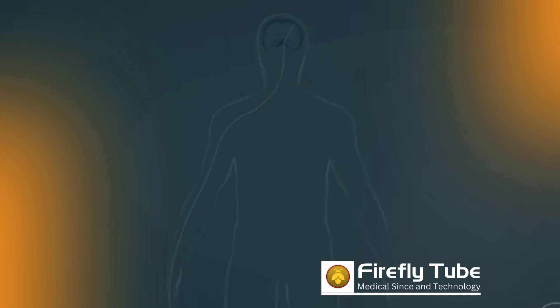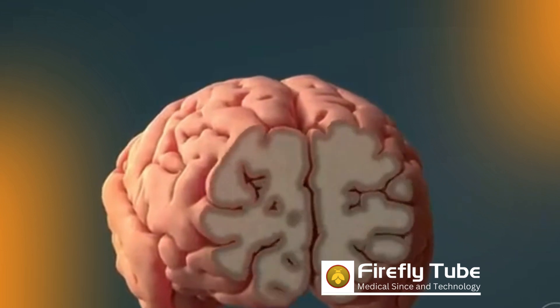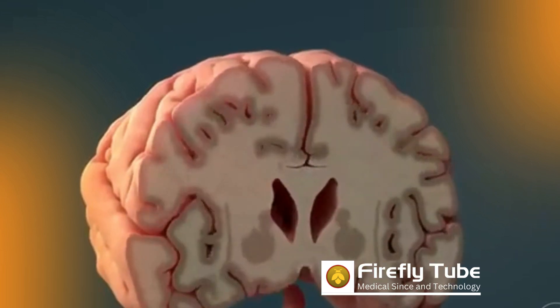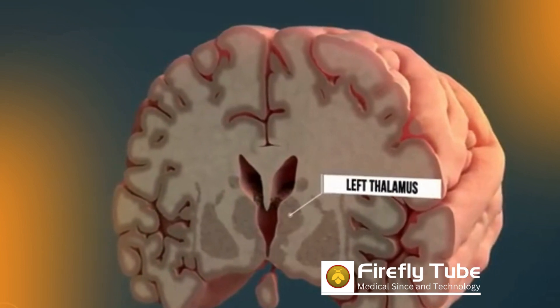Inside the brain, there are also clusters of nerve cell bodies that perform very specific tasks. The thalamus is an extremely important area, which is also known as the gateway to consciousness, and is part of the diencephalon.